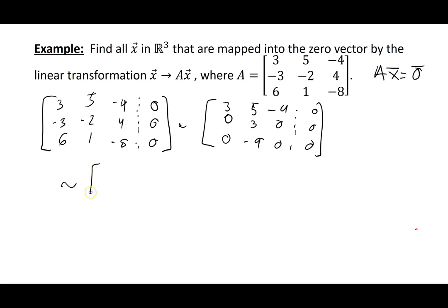Performing another row reduction, I get 3, 5, minus 4, augmented with zeros.